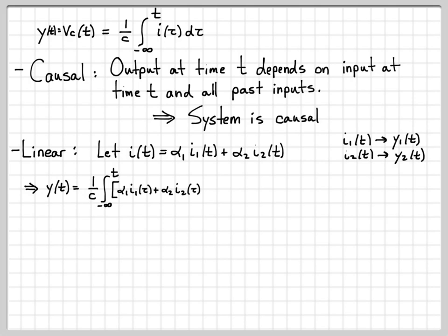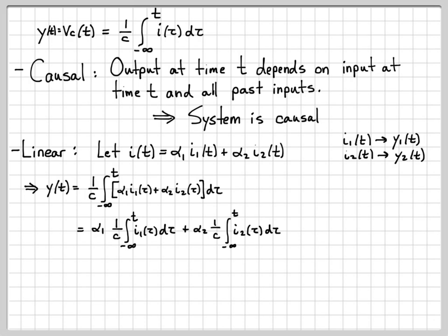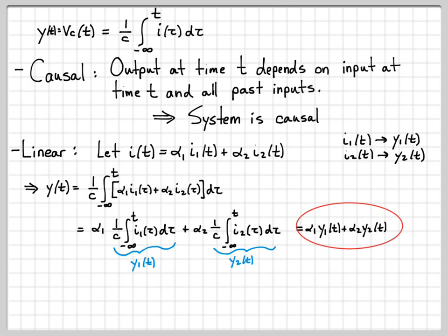The output for this combined input is the integral of the linear combination. I can break that apart into two integrals, and pull alpha_1 and alpha_2 out as constants. The first integral — 1 over C times the integral of i1 — is exactly y1. Similarly, the integral of i2 gives exactly y2. So what we have is alpha_1·y1(t) + alpha_2·y2(t). Superposition has held: a linear combination of inputs yields a linear combination of the corresponding outputs. So this is a linear system.